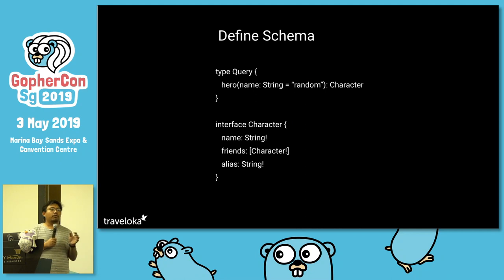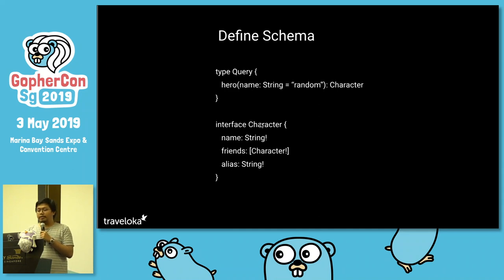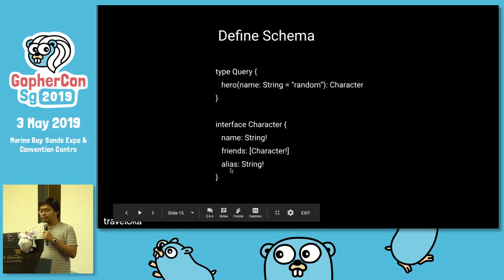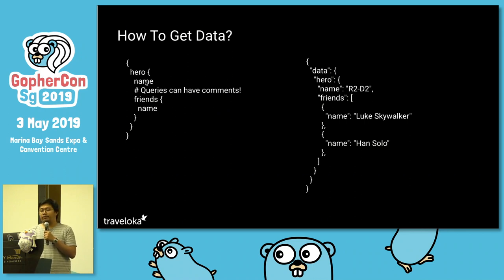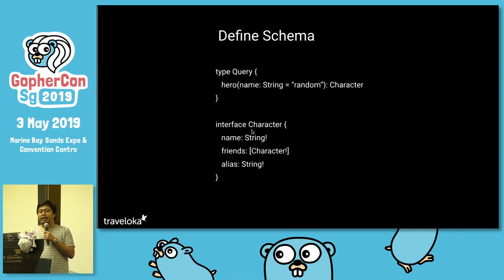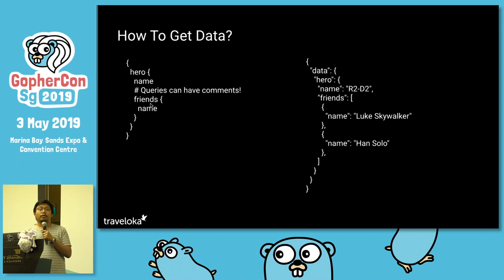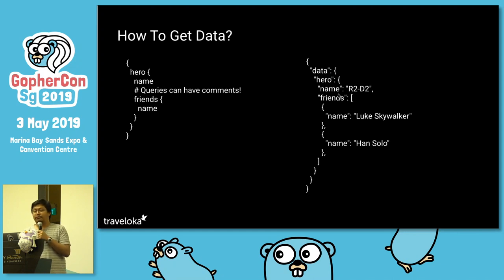This is the GraphQL schema. Before working with GraphQL you have to define the schema first. You must have a query — in this example I have a query called 'hero' that accepts a name and returns a character. The character has name, friends, and alias. To get data, you only specify which fields you care about. This query says: give me the name of this hero, and give me his friends and the name of those friends. Even though a character has name, friends, and alias, in this case I only request name and friends. The result gives me the hero, its name, and the friends — Luke Skywalker and Han Solo — and I only get their names.